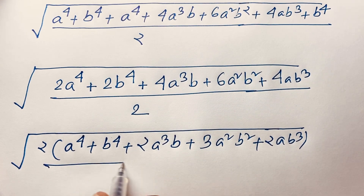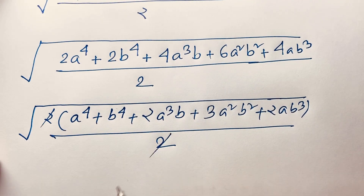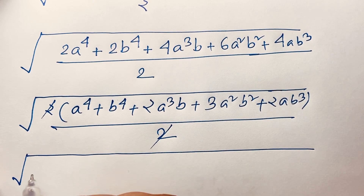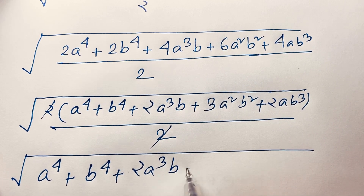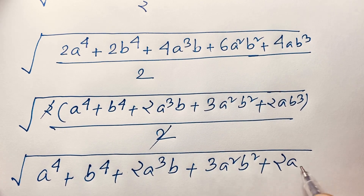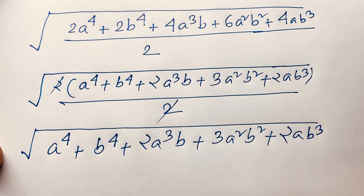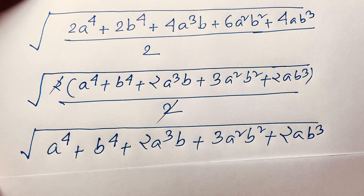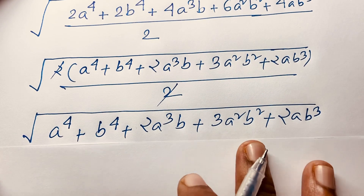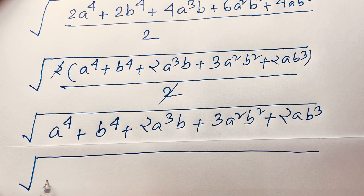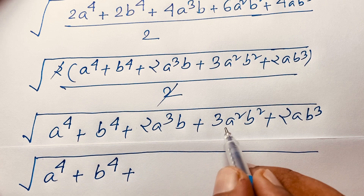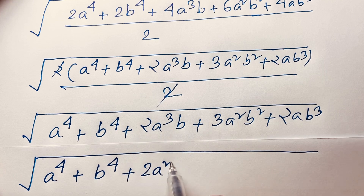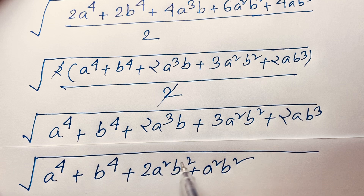The factor of 2 cancels with the denominator of 2, so we now find the square root of a⁴ plus b⁴ plus 2a³b plus 3a²b² plus 2ab³. We split the 3a²b² term as 2a²b² plus a²b², so that we can group terms: a⁴ plus b⁴ plus 2a³b plus 2a²b² plus a²b² plus 2ab³.